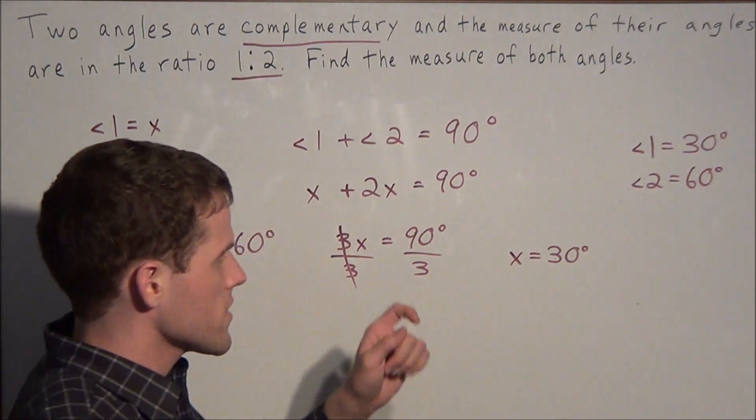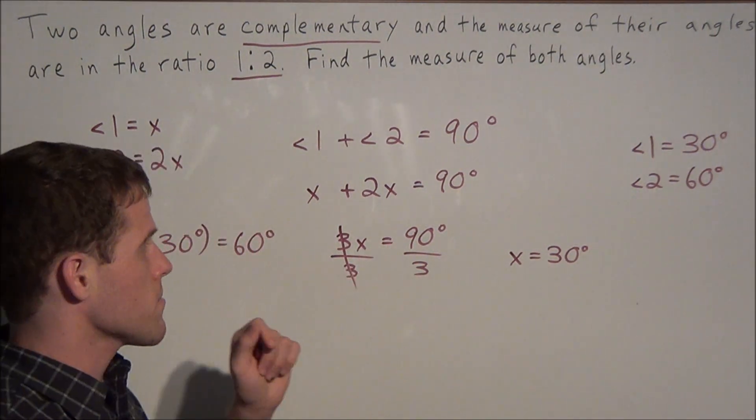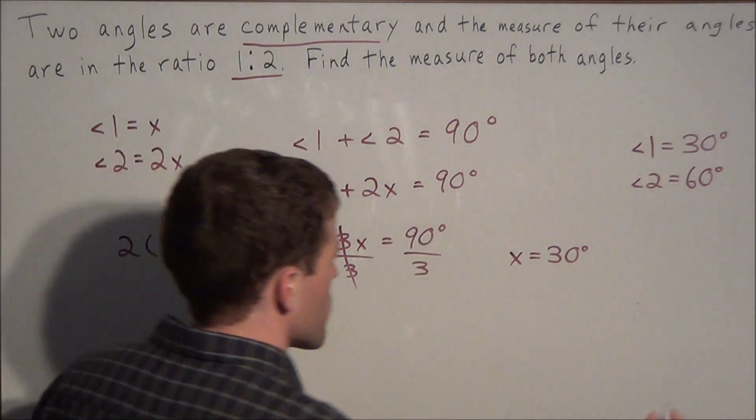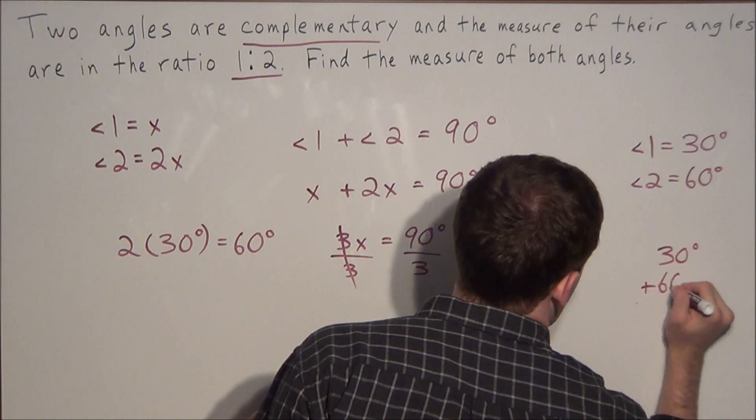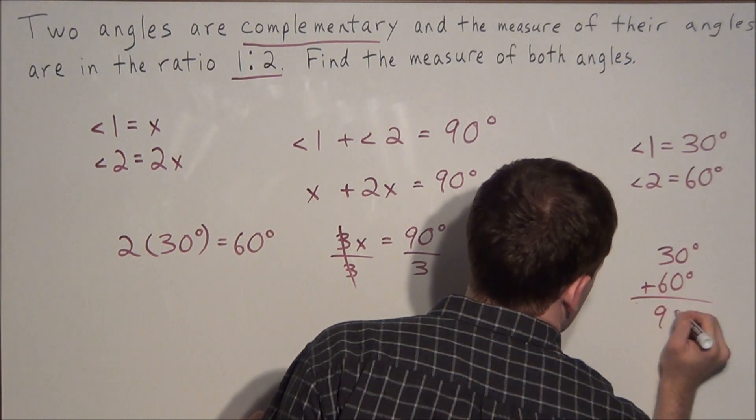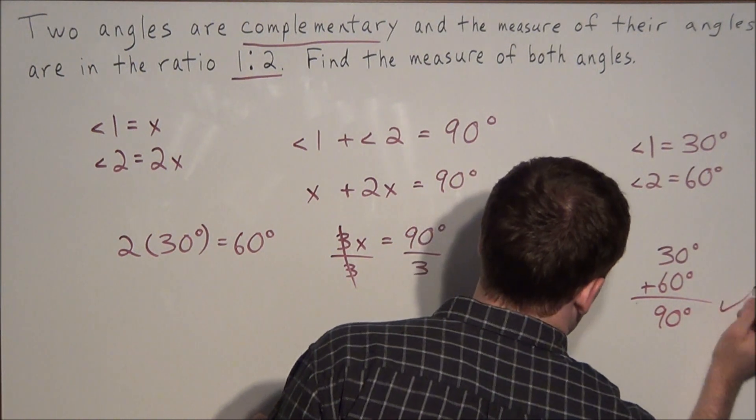If you have time on a test, it's a good idea to check that your angles are in fact complementary. So we add 30 degrees plus 60 degrees, which is 90 degrees. So that's one check.